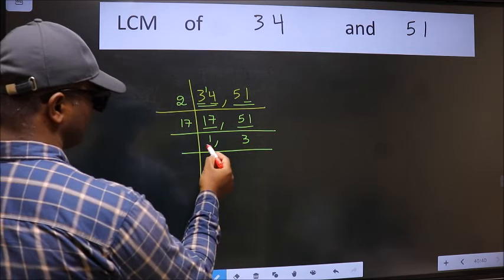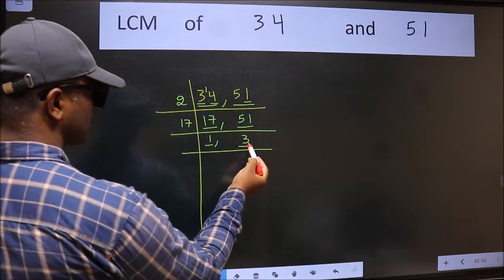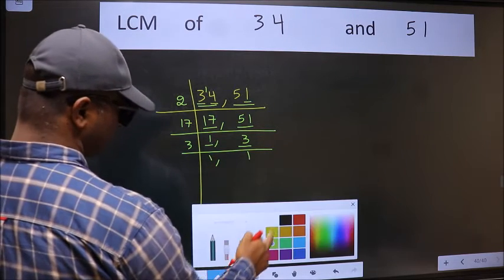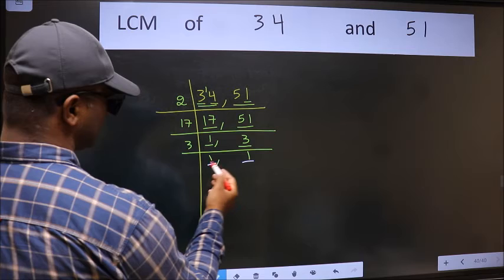Now we got 1 here. So focus on the next number, 3. 3 is a prime number, so 3, 1 times 3. So we got 1 in both places.